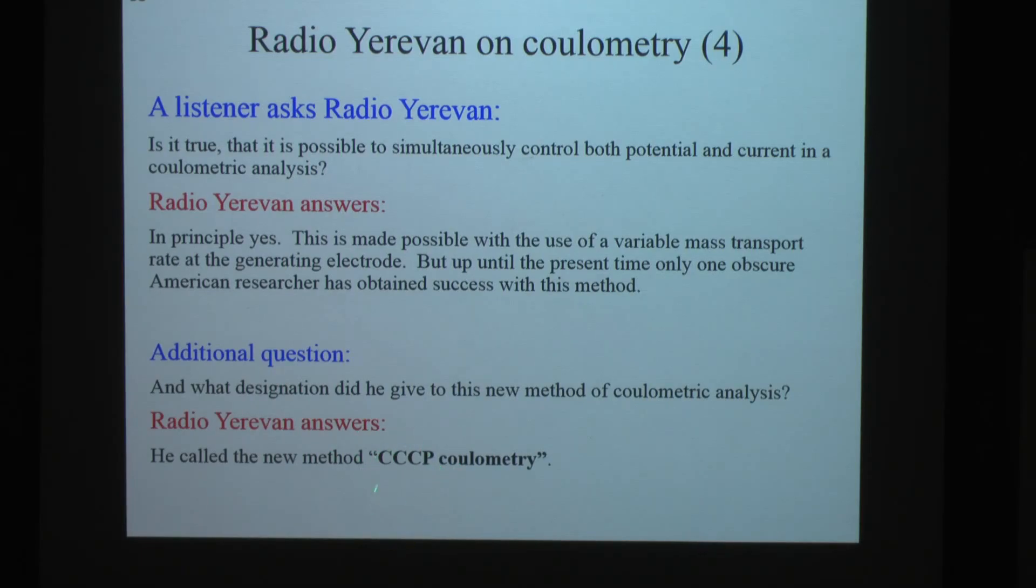You may remember the Olympic uniforms from back before the change. They said, it looked like CCCP on it. That's Soyuz Soviet Socialistische Republik, SSSR. So, you see it in Russian, so here the American is calling this USSR coulometry. That's the joke. You have to have it explained to you. Just a little bit.